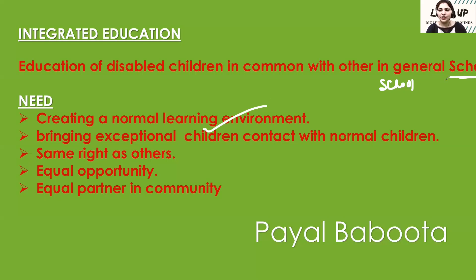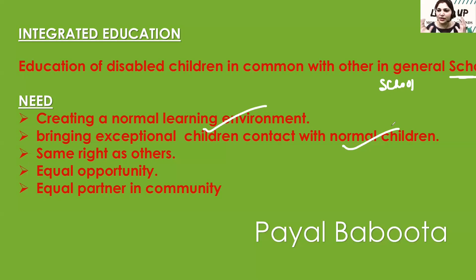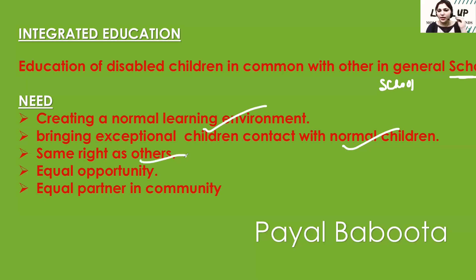The concept of integrated education is bringing exceptional children into contact with normal children. In this way, the disabled child can feel that they are a normal child — why should they receive special treatment, why can't they play with normal children and study with normal children? Sometimes a difference is created in society or in schools, and when we treat children differently, the child becomes mentally disturbed. So in integrated schools, both disabled and non-disabled children should take equal rights.